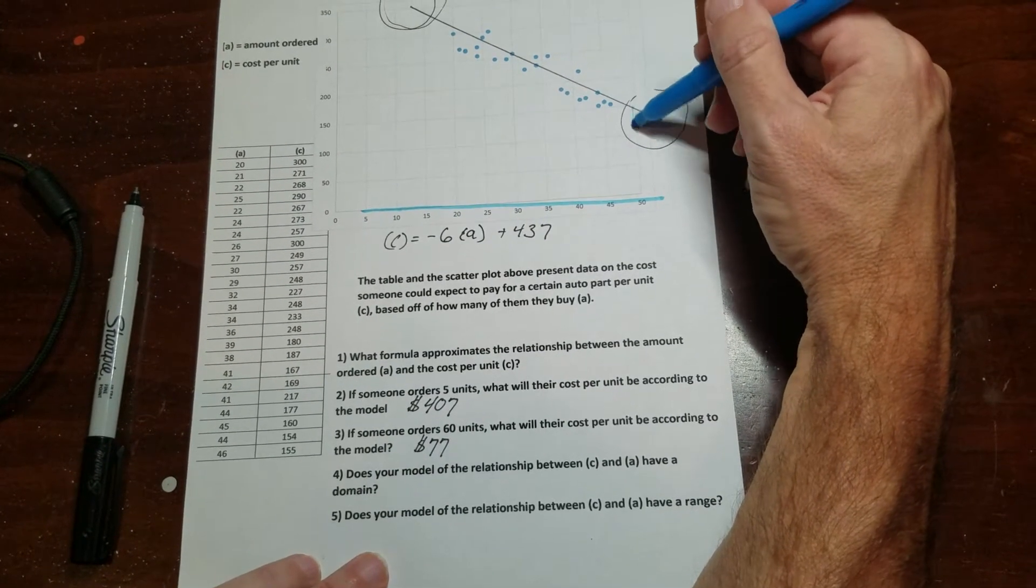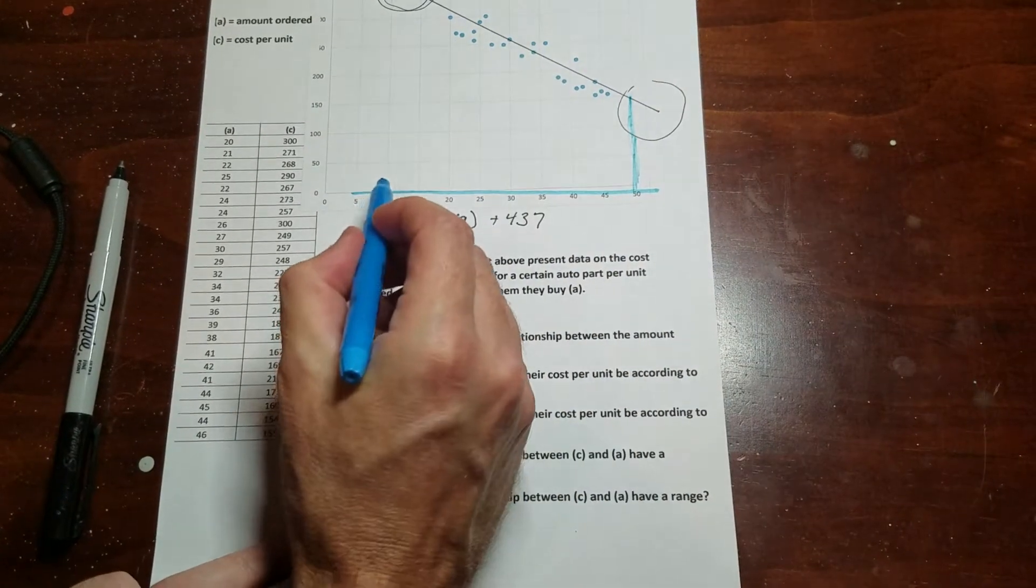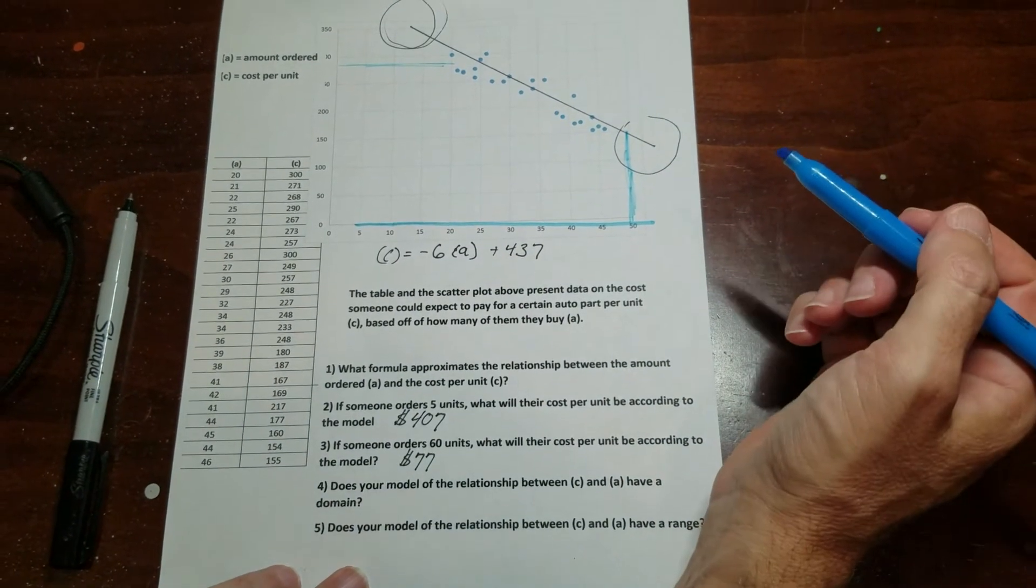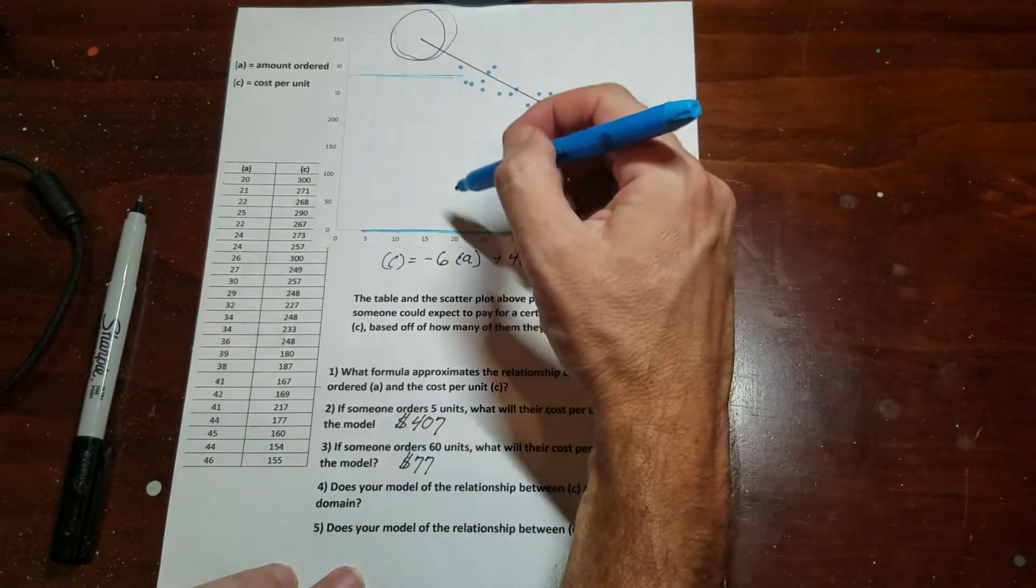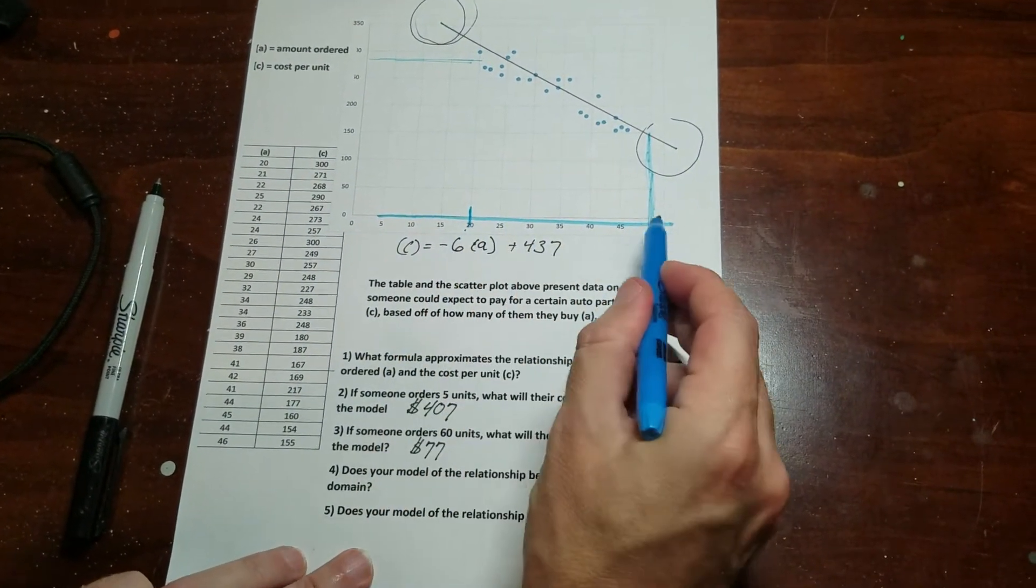So I'm going to say it goes to 50. And also, I don't really have data - you'll notice that there's no data points for anything up here. So I really don't know what it's going to do once it gets over there. I only know what it's doing from here. So you can see I drew here with the pen, it goes from 20 to 50.